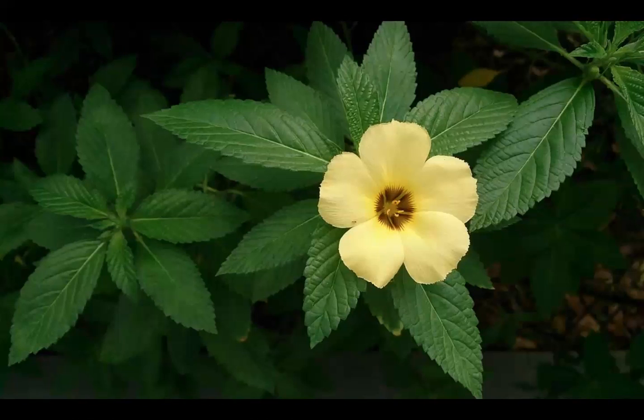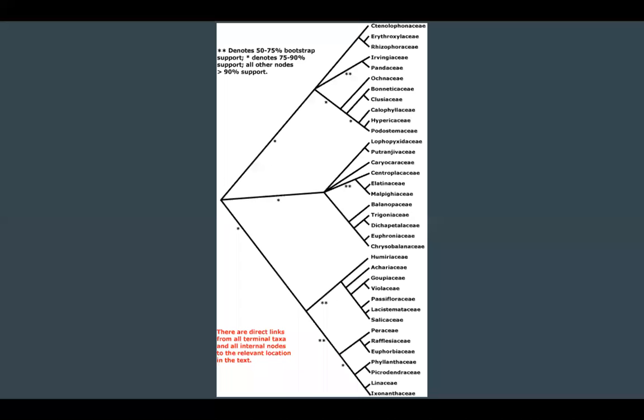Note how, even though they have different phylogenies, they still share some of the same characteristics, such as more than one stamen and unfused petals. Both are also monoecious.